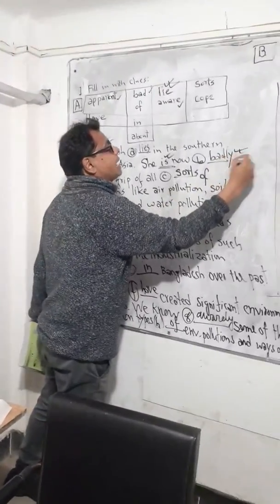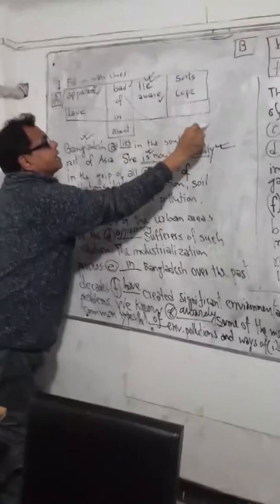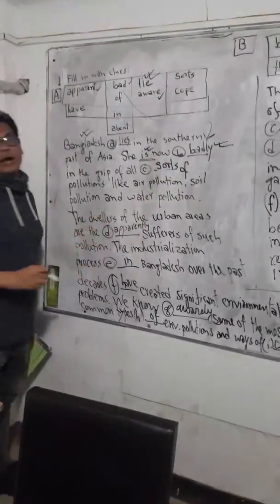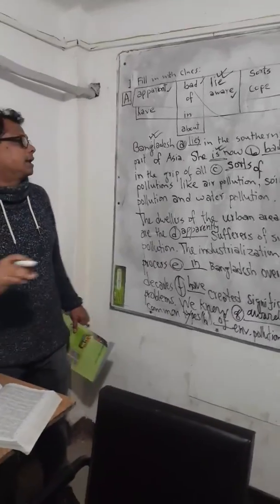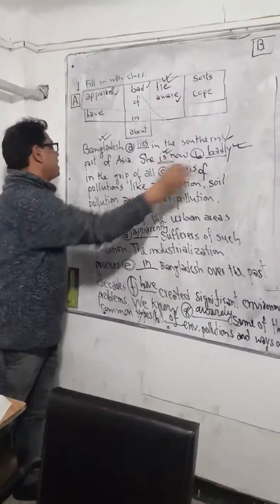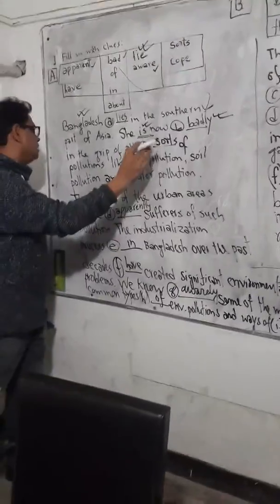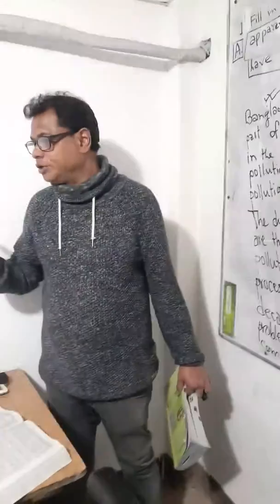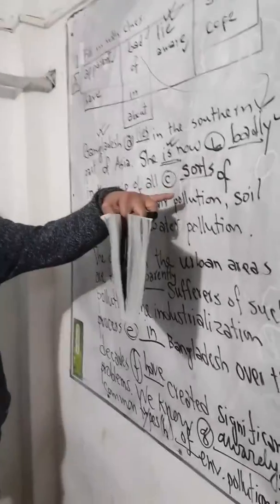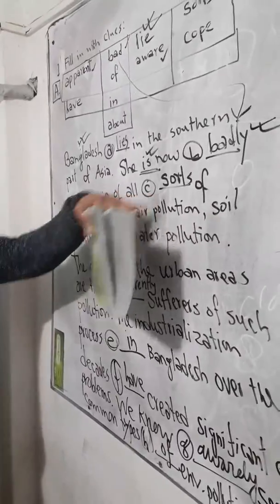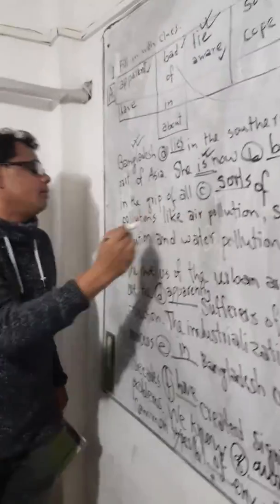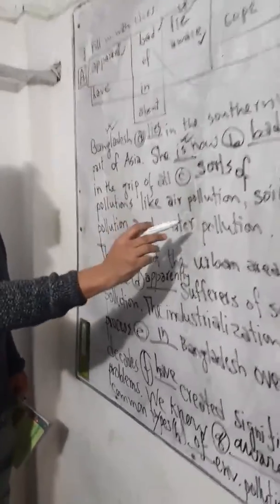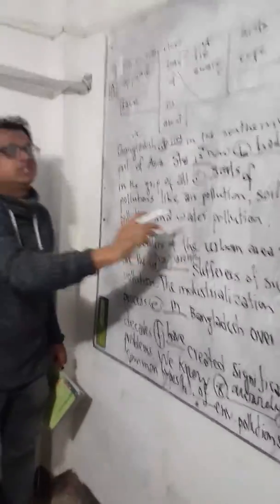Since the verb 'is' is already present, the gap needs an adverb. From the adjective 'bad' we can form an adverb by adding the suffix '-ly' — so the answer is 'badly.' She is now badly in the grip of all dash of pollutions. For 'all dash of pollutions,' we need a word meaning types or kinds — so we place 'source.' All sources of pollutions: air pollution, soil pollution, and water pollution.